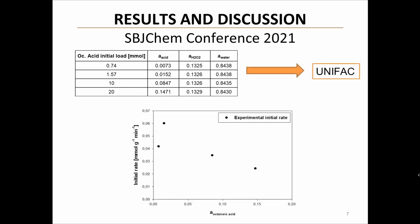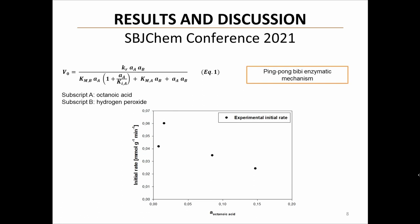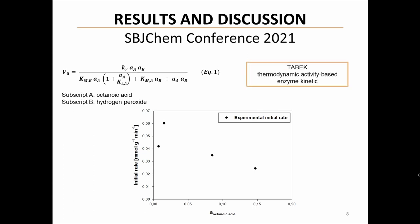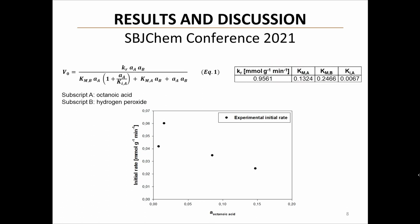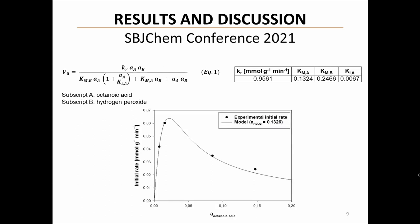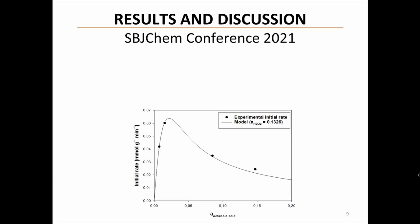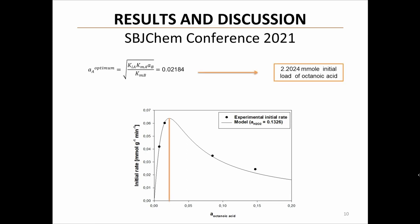The experimental initial reaction rates for each run are presented in this graph. A ping-pong BB kinetic law evaluated in the initial thermodynamic activities of the substrates is proposed. This methodology is known as thermodynamic activity-based enzyme kinetics (TABEC). These are the kinetic parameters obtained from the fit of the experimental data. As shown, the initial reaction rates decay with the increase of the initial octanoic acid activity, indicating the existence of an optimal initial activity of octanoic acid for each initial activity of hydrogen peroxide.